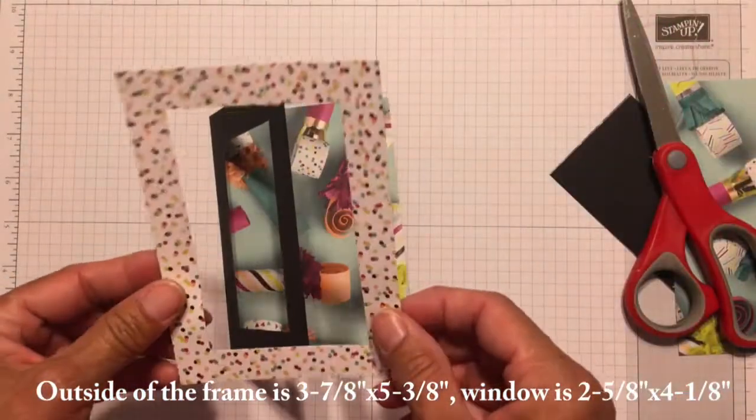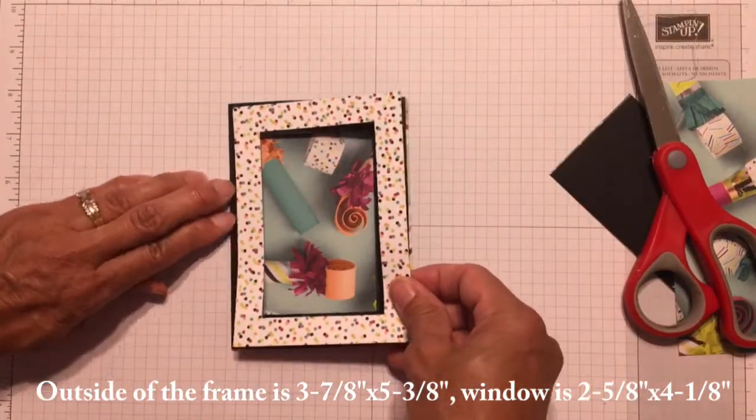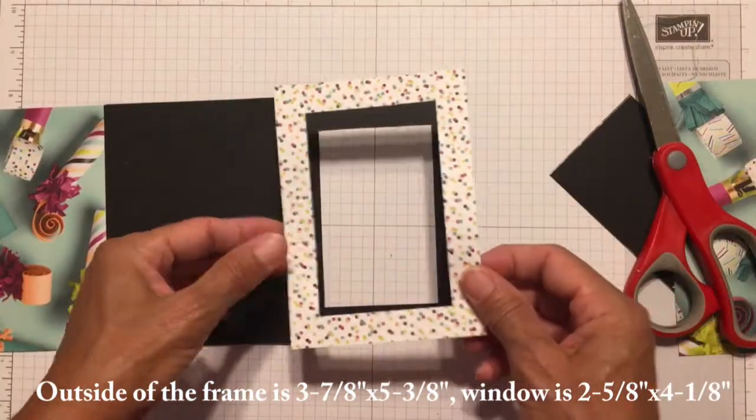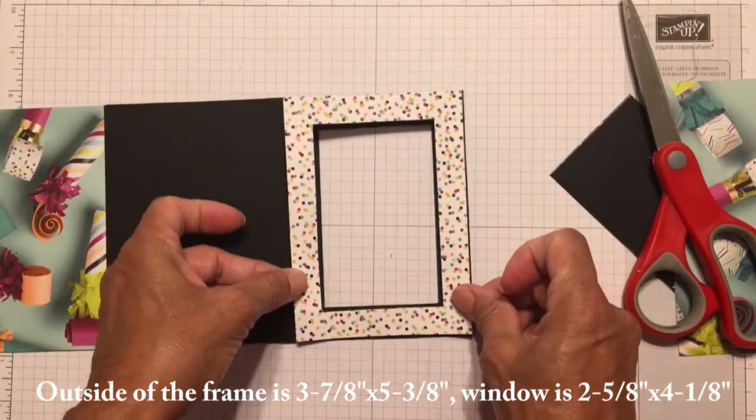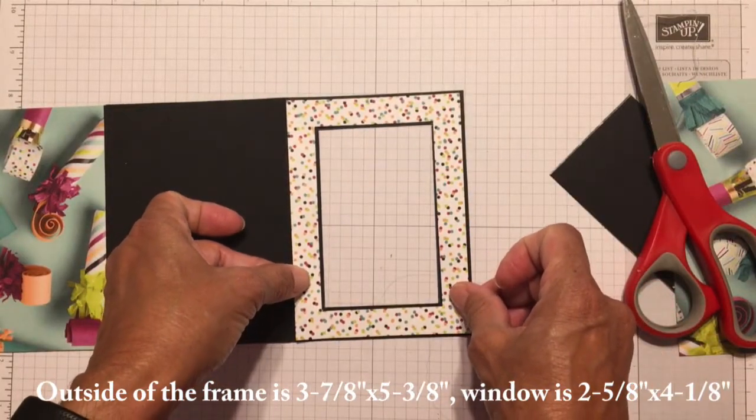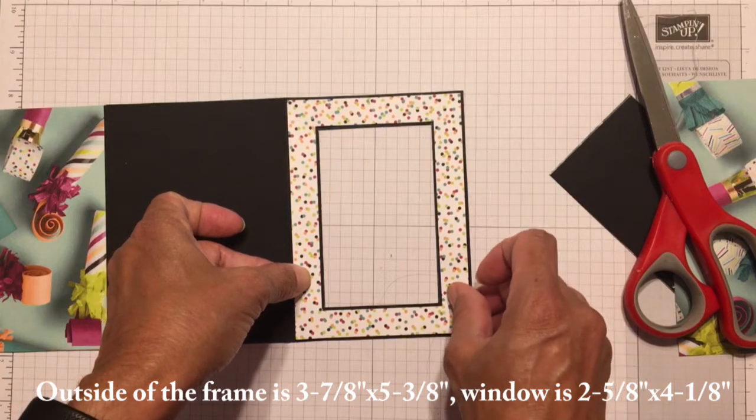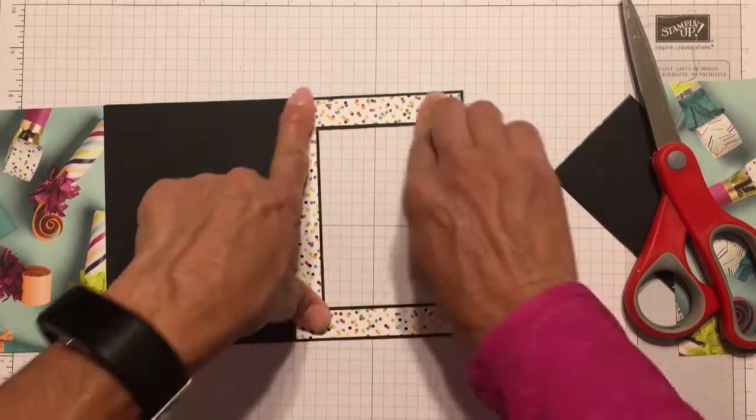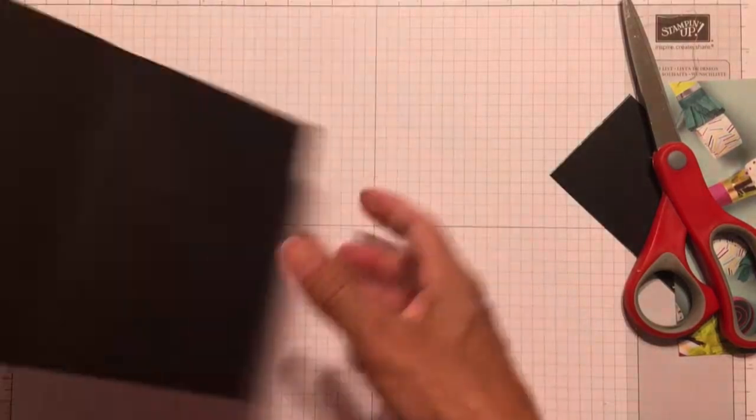I've already cut a piece of the confetti designer series paper just a little bit smaller than the card front. And I also cut the inside window a little bit larger, an eighth of an inch larger than my card base window. I'll have all the measurements on my blog.